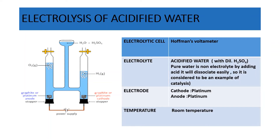The electrode used is a platinum electrode. Both cathode and anode are made up of platinum as it is an inert electrode — it won't take part in the reaction. The temperature is maintained at room temperature, ordinary temperature.